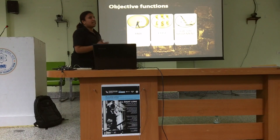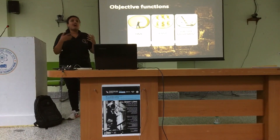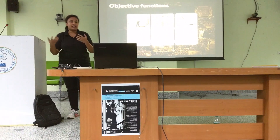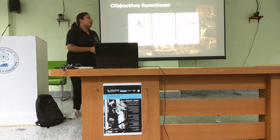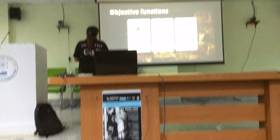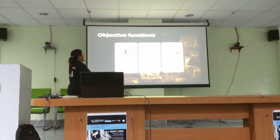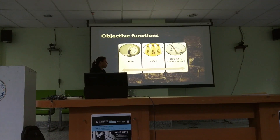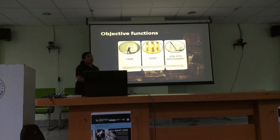In the genetic algorithm, we need something to optimize. So what are our objectives? The objectives in this research work are time, cost, and job site movement. The optimization is Pareto optimization, meaning all three are dependent on each other.